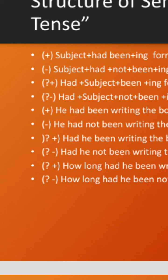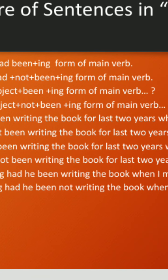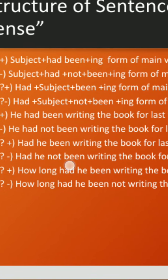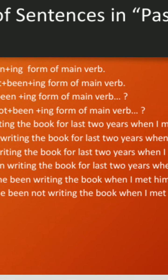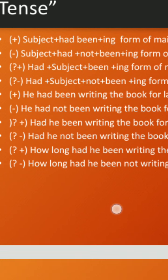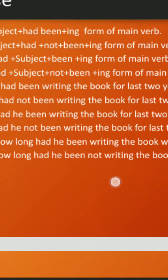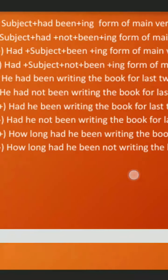For question positive — that is, questions with auxiliary verb — the construction is: had plus subject plus been plus ing form of main verb plus rest of the clause plus question mark. For example: 'Had he been writing the book for last two years when I met him in Bangalore last month?'